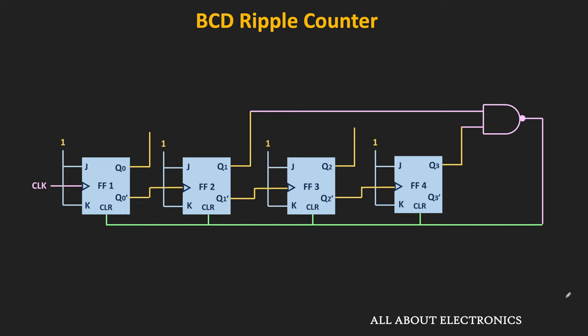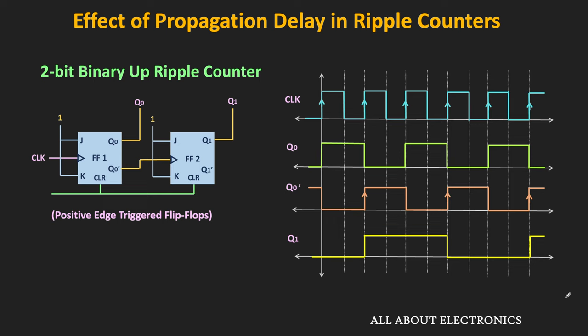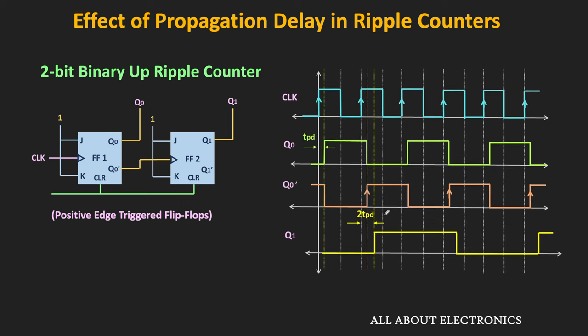So far during our discussion, we have assumed that the propagation delay of the flip-flop is equal to 0. That means the flip-flop responds to the clock transition immediately. But actually, every flip-flop has some finite propagation delay, and because of that, they will respond to the clock transition after a finite interval.